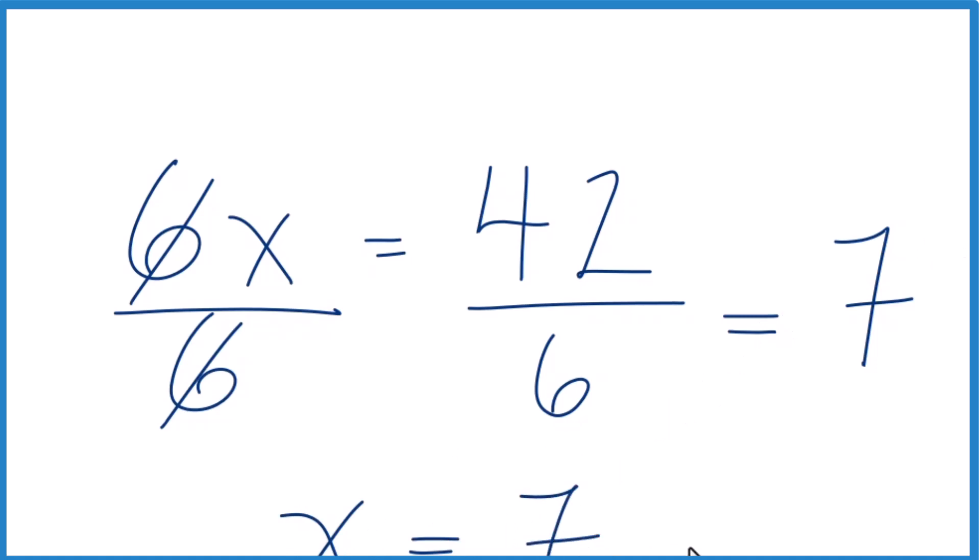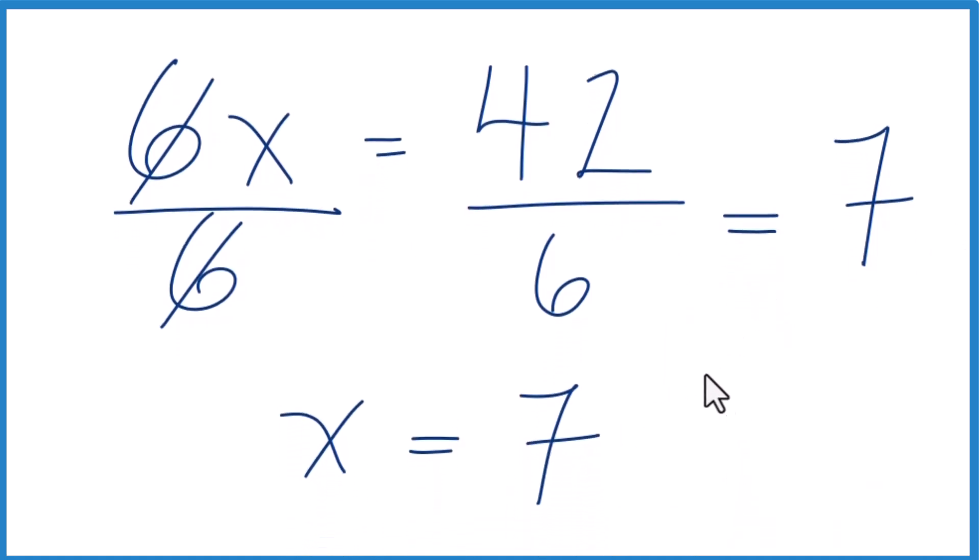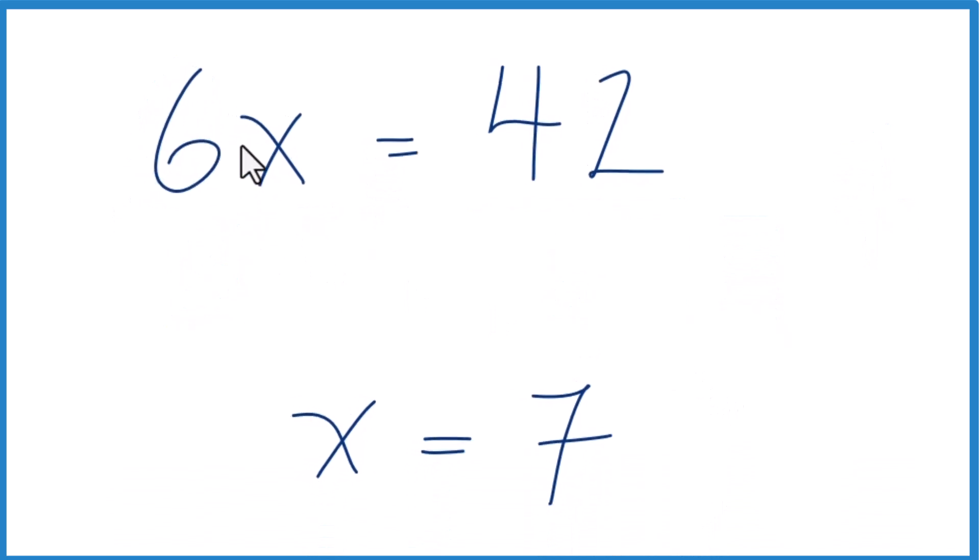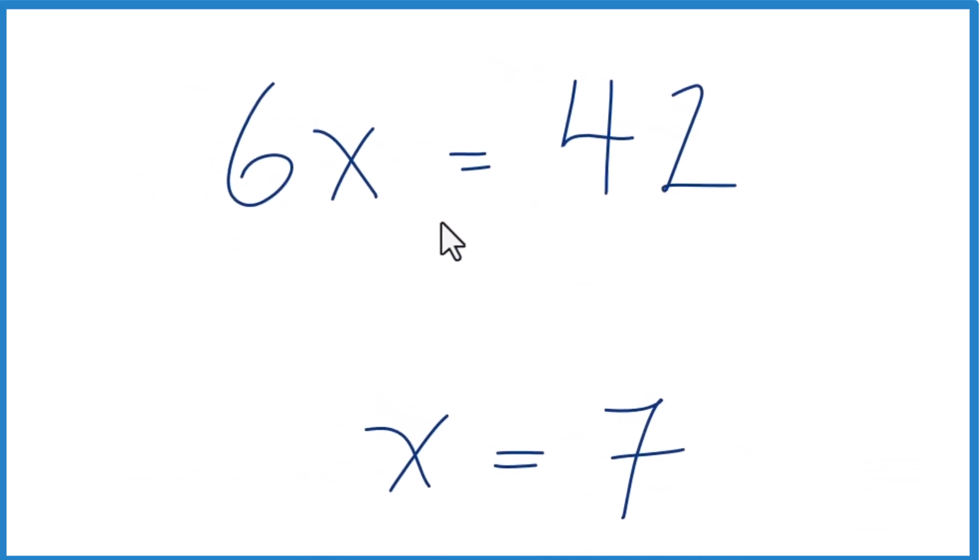We can check our work. We had 6x equals 42. What we're going to do is substitute in 7 for x. We'll put the 7 in parentheses. 6 times 7 equals 42, so we know we did this correctly.